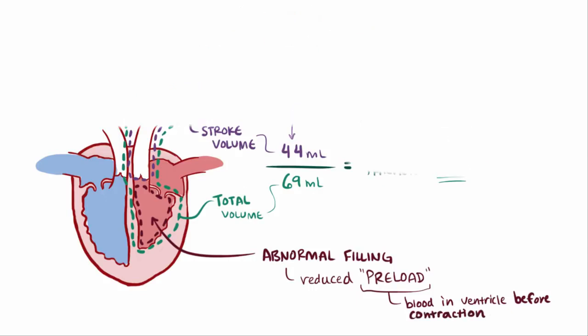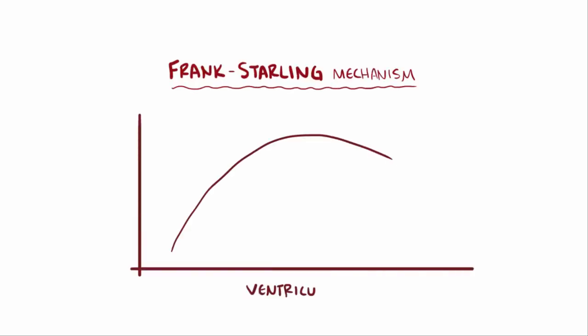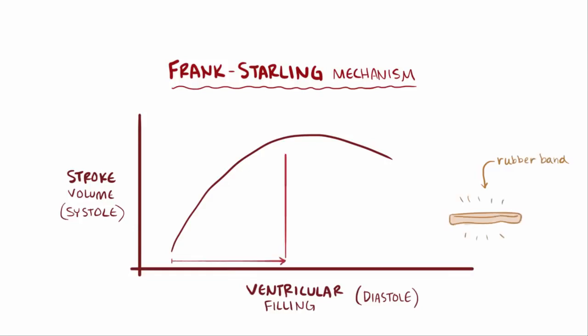An important relationship between systolic and diastolic function is the Frank-Starling mechanism, which basically shows that loading up the ventricle with blood during diastole and stretching out the cardiac muscle makes it contract with more force, which increases stroke volume during systole. This is kind of like how stretching out a rubber band makes it snap back even harder, except that cardiac muscle is actively contracting, whereas the rubber band is passively going back to its relaxed state.